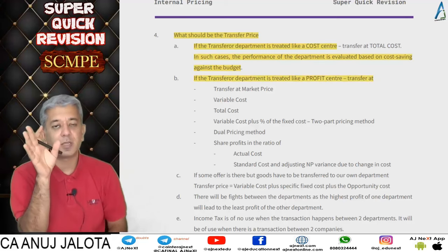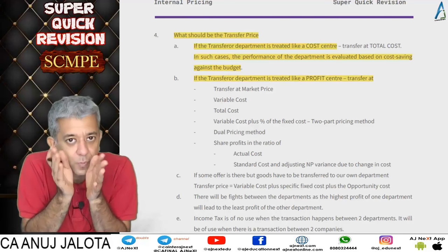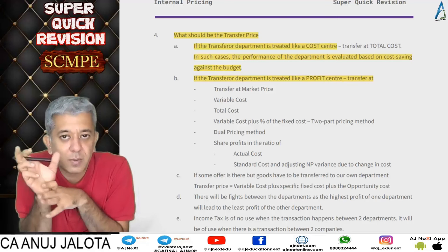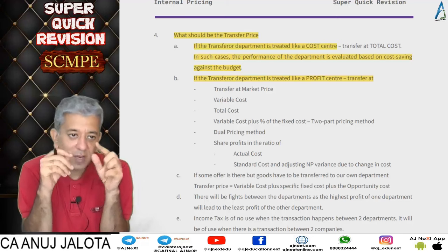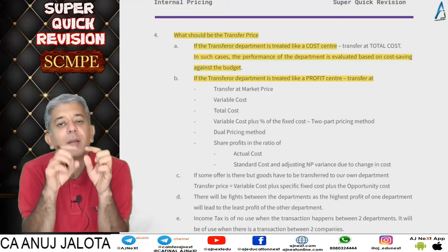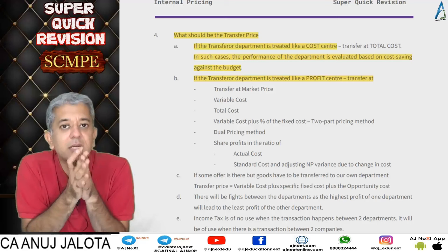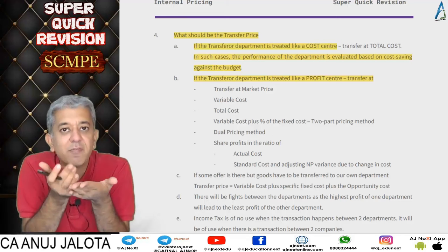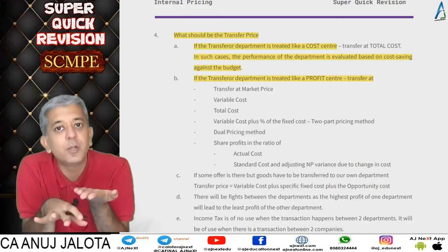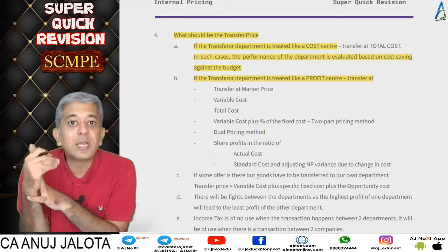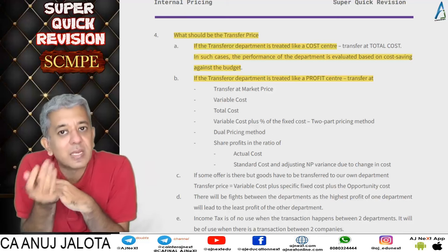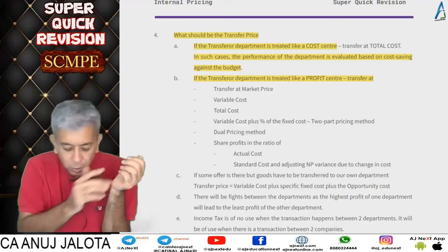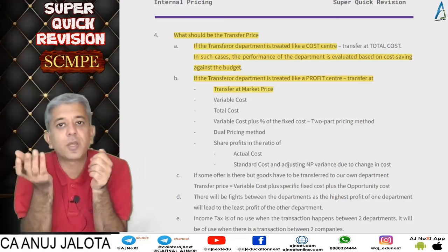Now, if the transferring department is treated as a profit center, whenever it makes goods and gives them to another division, it will no longer transfer at cost — it will transfer at cost plus markup. This price is called transfer price. That department's sales minus cost gives profit. The biggest advantage of profit centers: every manager will be inclined to increase sales and decrease cost.